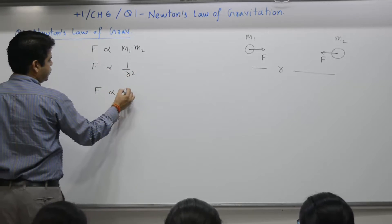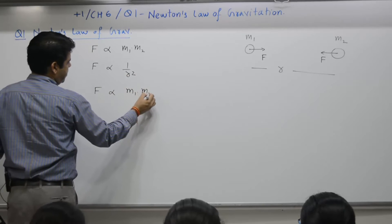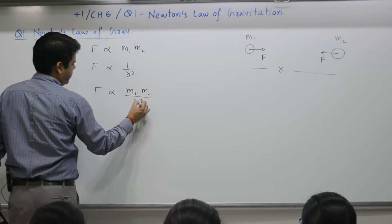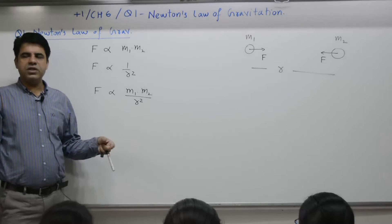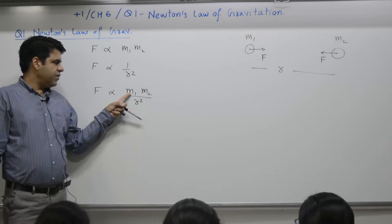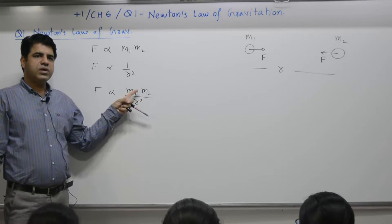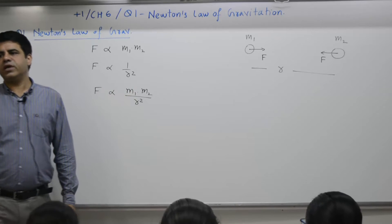So F is proportional to m1 m2 by r square. But if you know only this proportional, then the only thing you can say is if m1 is two times, m2 is also two times, suppose force becomes how many times? Four times.